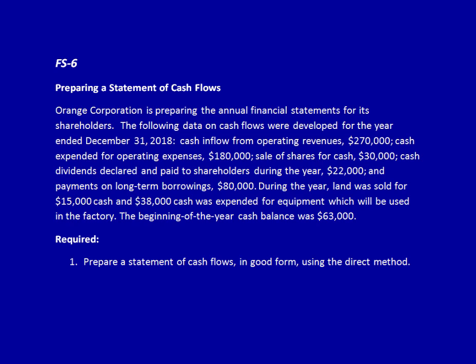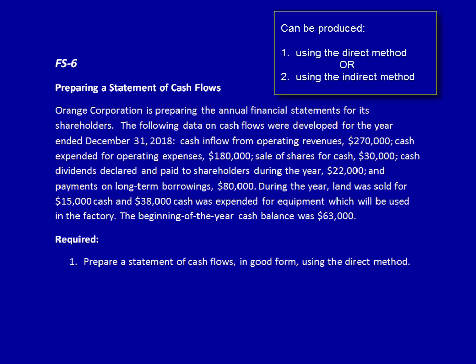The statement of cash flows can be completed in two different ways. One is the direct method and the other is the indirect method. IFRS prefers the use of the direct method, but approximately 1% of all companies use the direct method and the remainder use the indirect method.